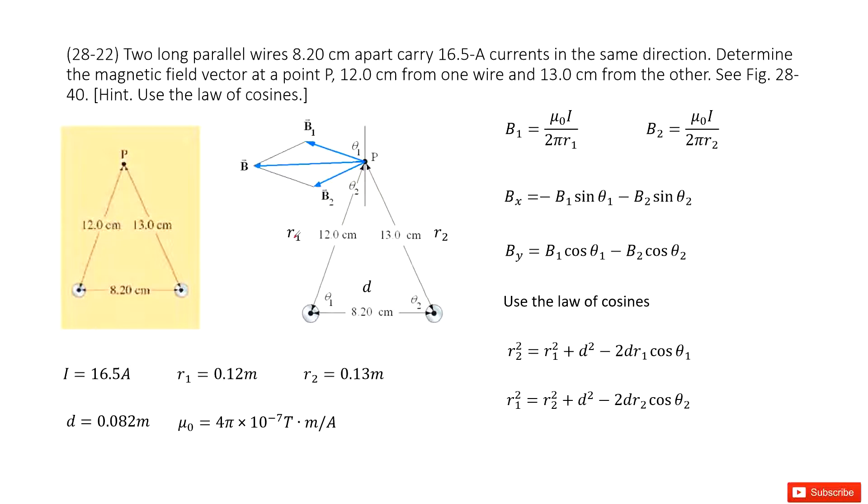So we can consider this one as R1, R2, and D, okay? Now we can determine the magnetic field at P. We can consider this P just comes from wire 1 and wire 2, right?